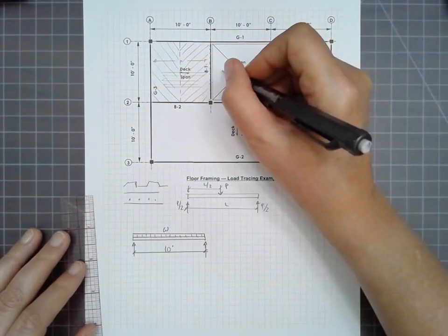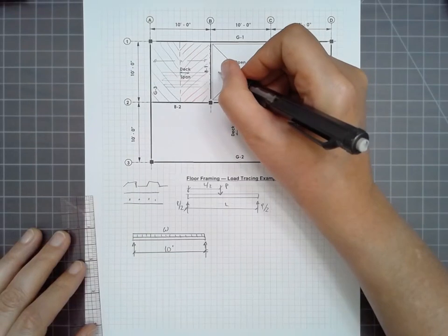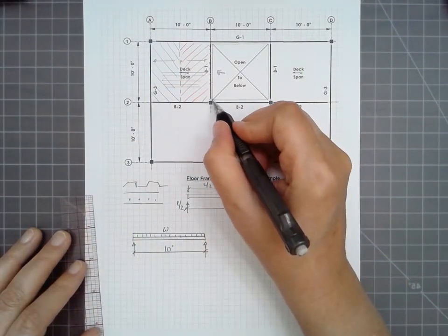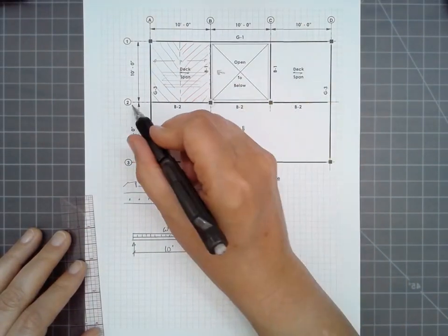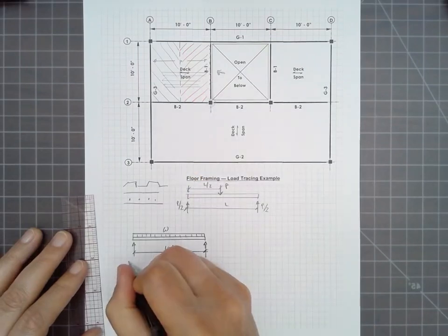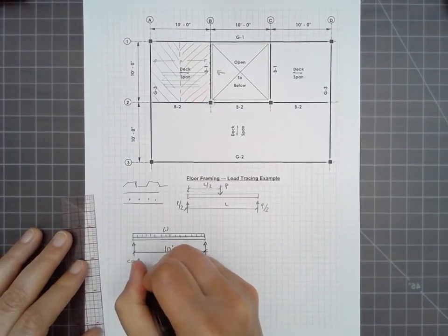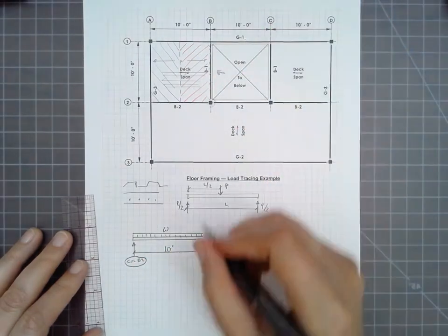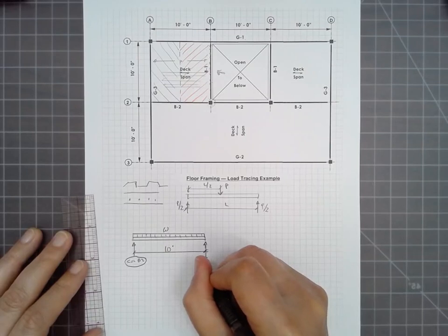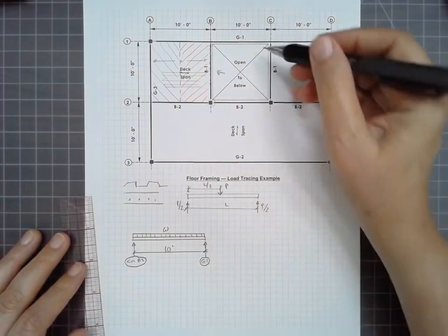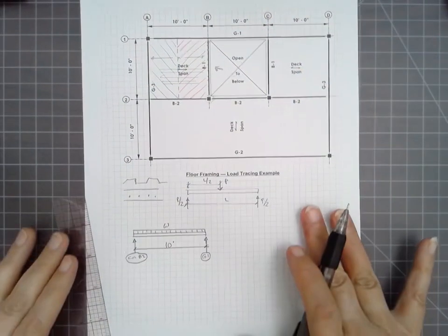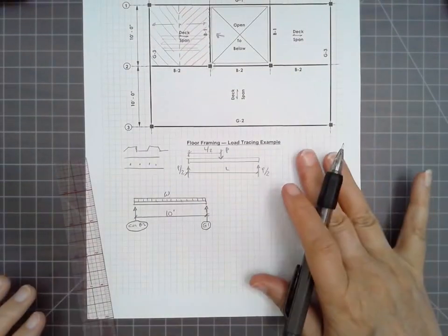Now when we look at B1, if I'm looking at it from the right-hand side looking left, in this direction, that means that it's being supported by this column on the left-hand end, known as B2. On the right-hand side, it's being supported by the girder G1. And that's really important because we need to know where these forces are going to. We need to know what's holding up what.